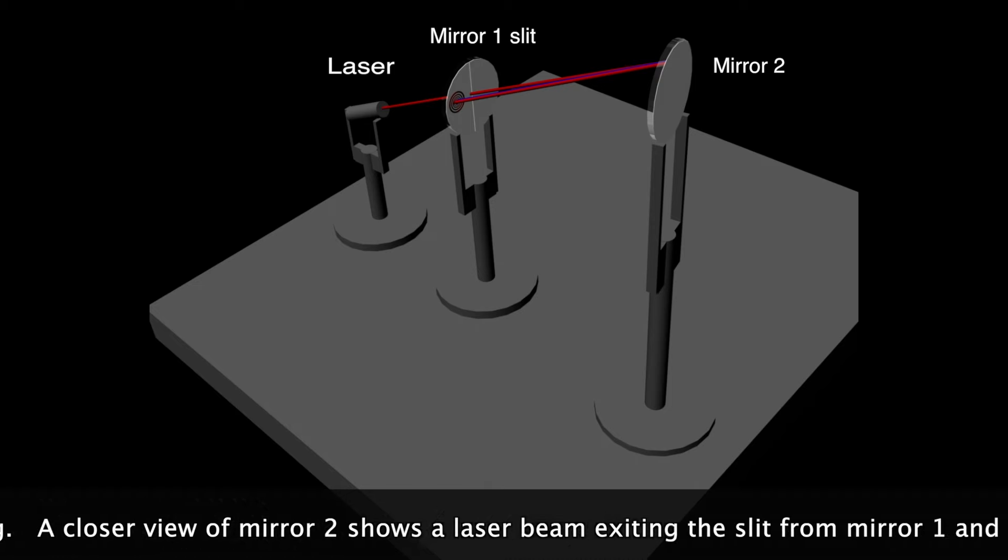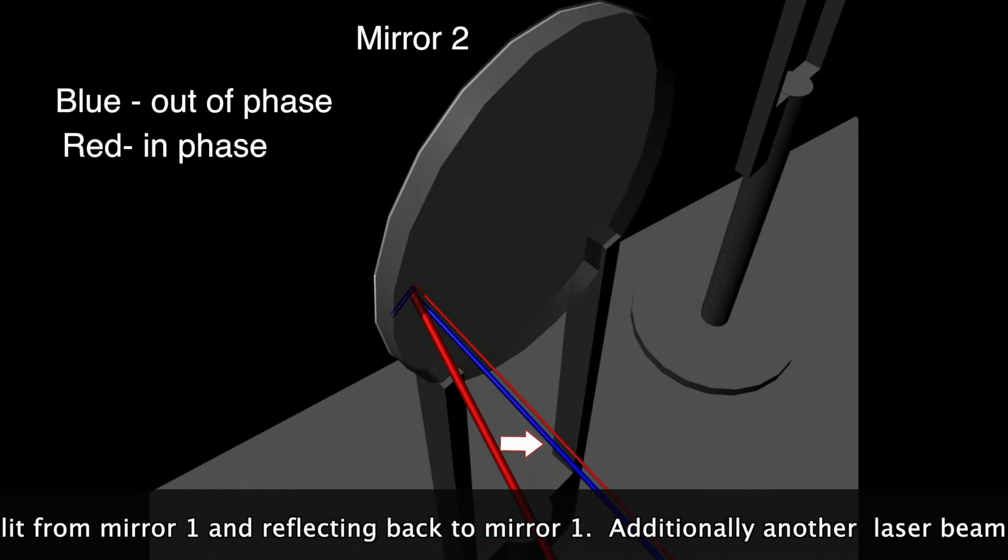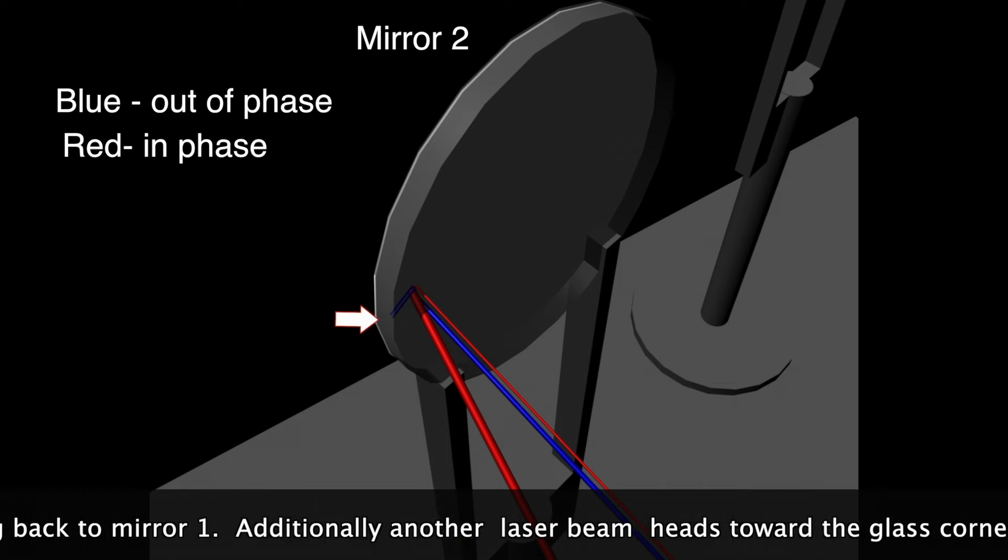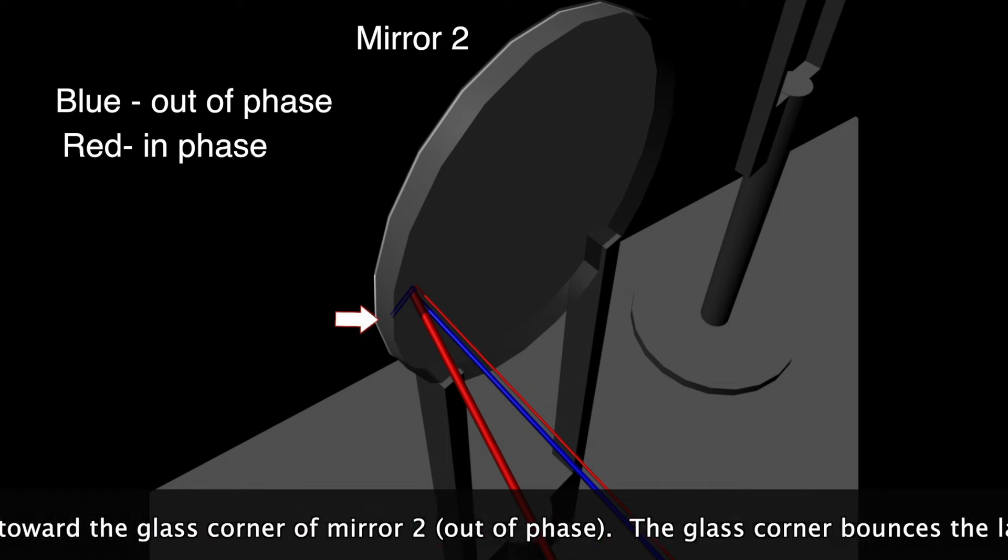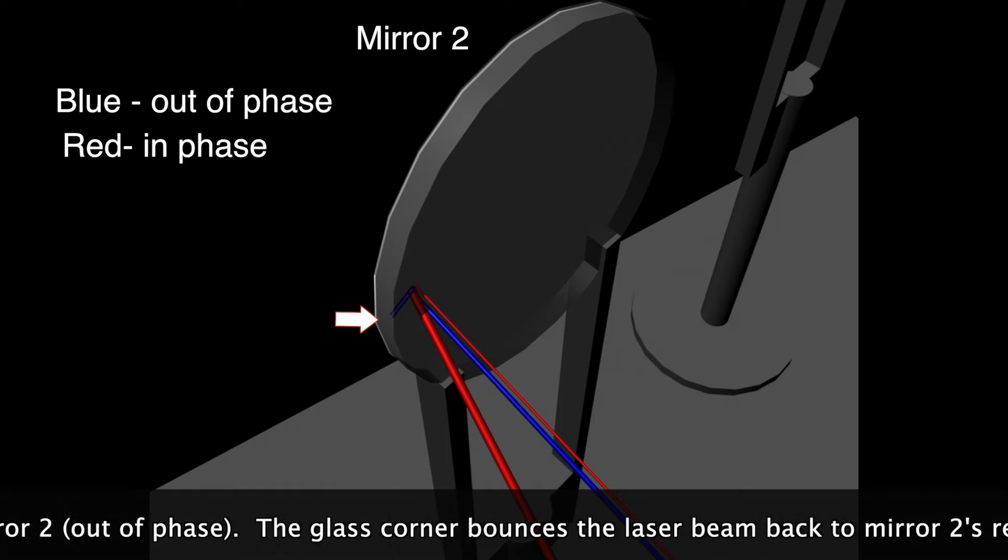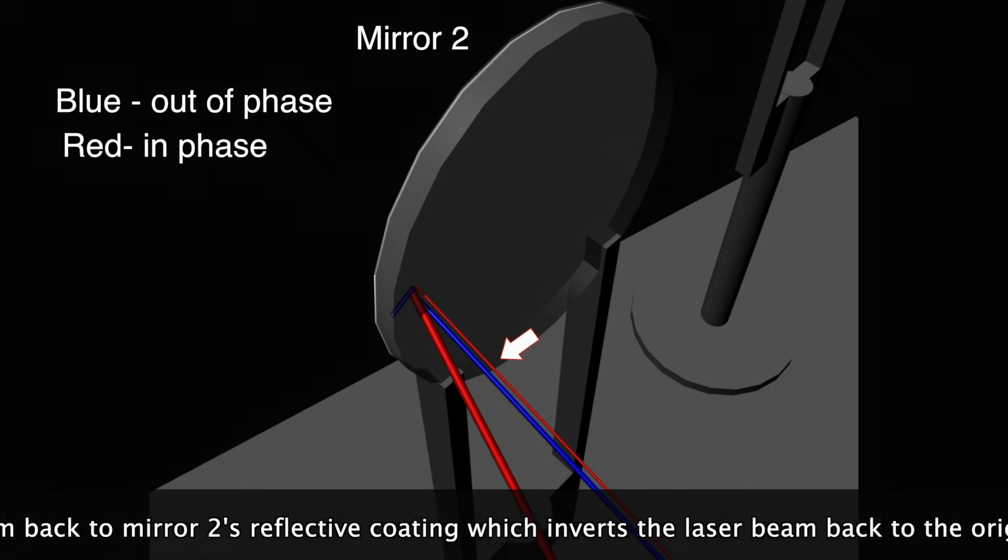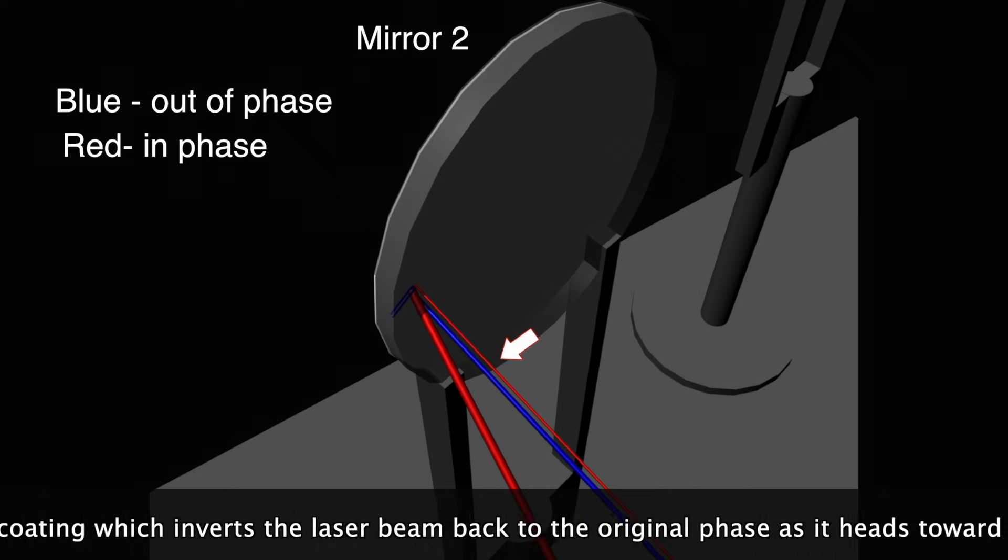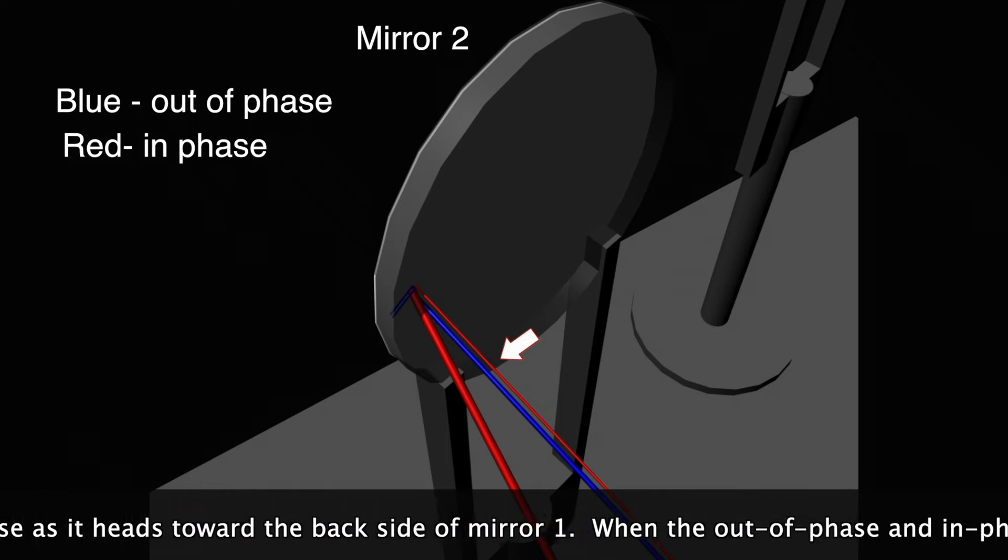A closer view of mirror 2 shows the laser beam exiting the slit from mirror 1 and reflecting back to mirror 1. Additionally, another laser beam heads toward the glass corner of mirror 2 out of phase. The glass corner bounces the laser beam back to mirror 2's reflective coating which inverts the laser beam back to the original phase as it heads toward the back side of mirror 1.